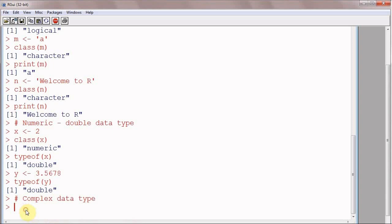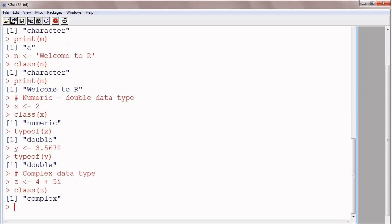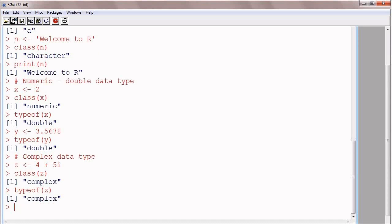Most of the time, you will not be using this data type, but you should know about this basic or atomic data type in R. Now, to store a complex data type, we can write it as Z is assigned 4 plus 5i, real and imaginary part, and class of Z is of course complex, and type of Z again complex.